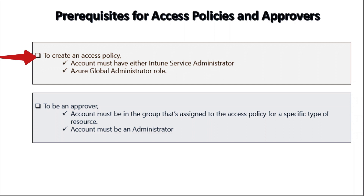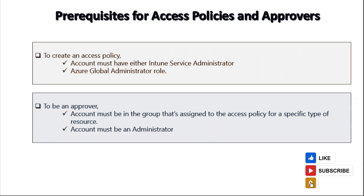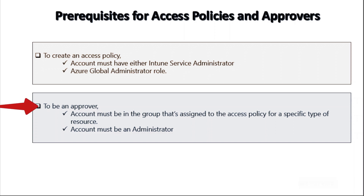Now let's talk about the prerequisites for creating access policies and for approvers. To create an access policy, an account must have either the Intune Service Administrator role or the Azure Global Administrator role assigned. To be an approver, the account must be in a group assigned to the access policy for a specific type of resource, and the account must be an administrator.